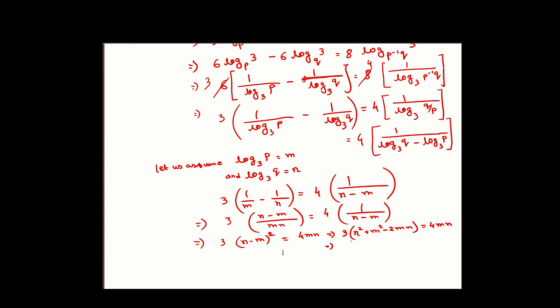We get 3N squared minus, 3 into 2 is 6 and here it is minus 4MN, so minus 10MN plus 3M squared. From here we can write it as (N minus 3M)(3N minus M) equals 0. If we factorize this thing, you will get this term because 3 times 3 is 9 and we can write minus 10 as minus 9 minus 1.